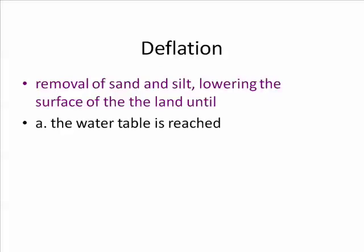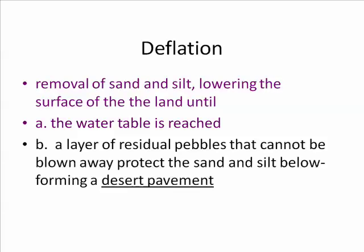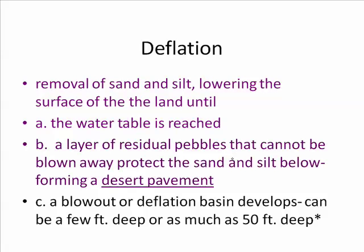Deflation is the removal of sand and silt, which makes the surface of the land go down. This would continue endlessly until either the water table is reached — holding the soil in place — or you have something called a desert pavement: a layer of residual pebbles that can't be blown away.